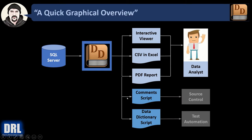There's also bonus output. Two different scripts can be generated from the data dictionary tool. A comments script that generates or updates or creates the comments for all of your tables, columns, and views. I would recommend generating this and putting it in source control so you can update the comments easily in the future. Alternatively, the data dictionary script that's run behind the scenes can also be generated, if you want to use it for test automation or any other development purpose.